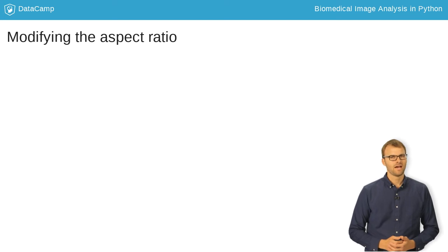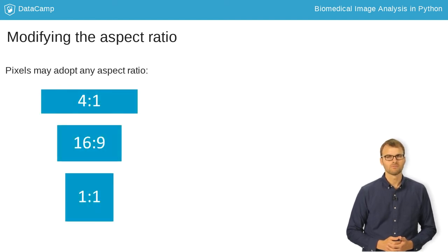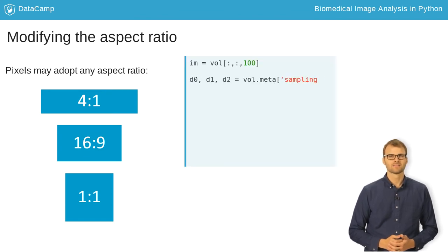Many datasets do not have equal sampling rates across all dimensions. In these cases, you will want to stretch the pixels along one side to account for the differences. The amount of stretching needed is determined by the aspect ratio. Here, we have decided to plot a slice with data from the first and second dimensions.